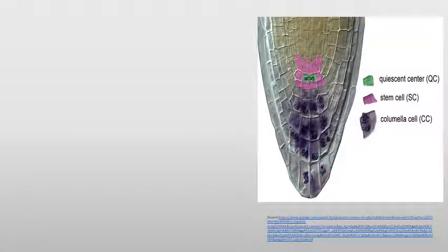The next topic is the quiescent center. 'Quiescent' means a state of inactiveness. The quiescent center is commonly a group of cells present below the apical meristem. These cells have special characteristics: their DNA content, RNA content, proteins, and cell organelles are scarce — much lower compared to the apical meristem. However, under certain circumstances, such as when the apical meristem is injured or cells degenerate, this quiescent region acts as a reservoir or storehouse for meristematic cells.